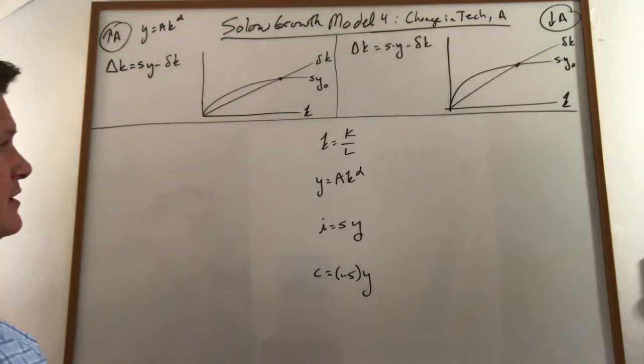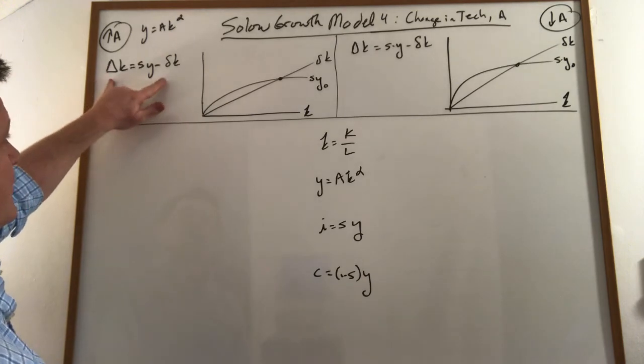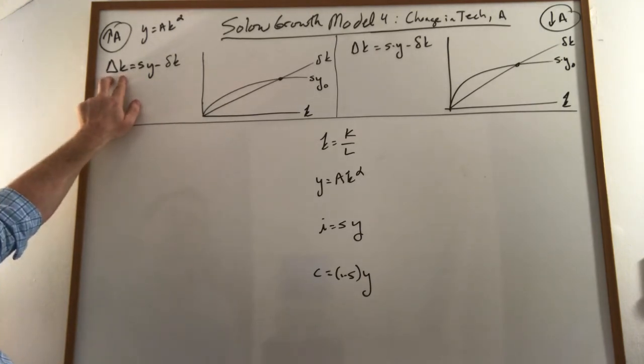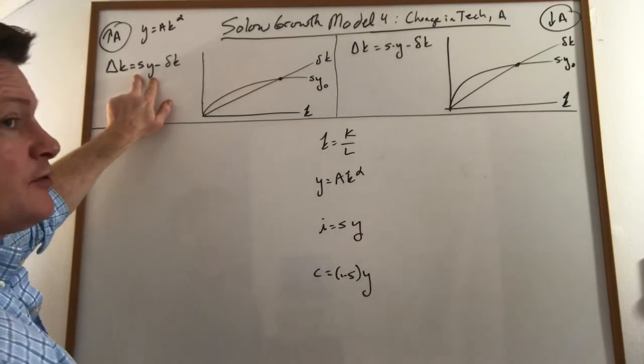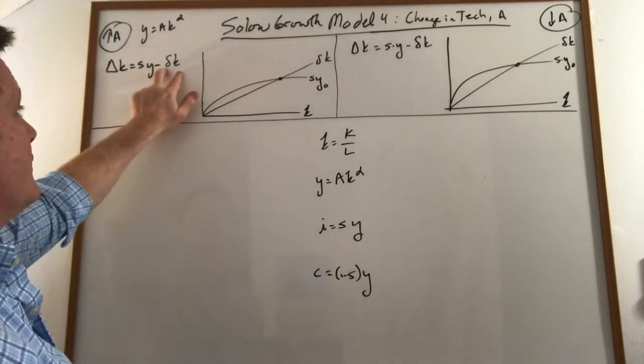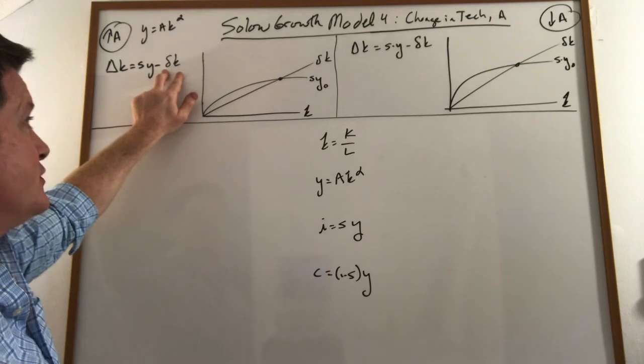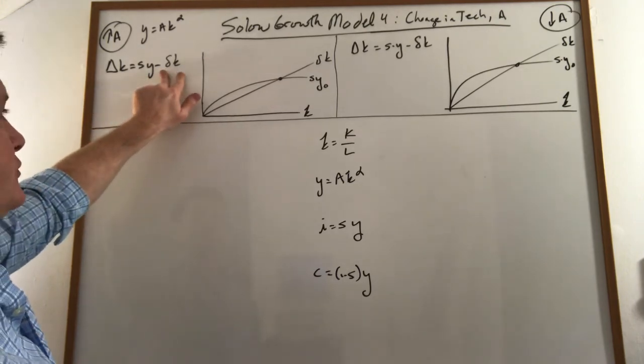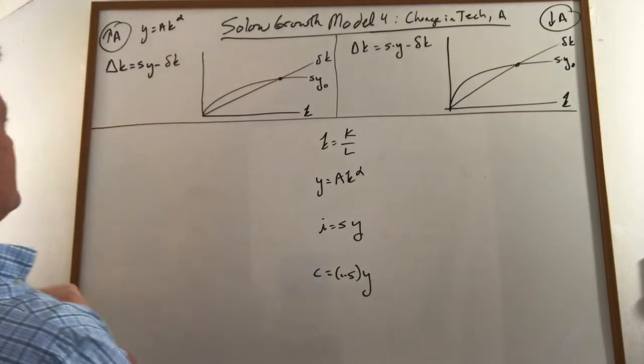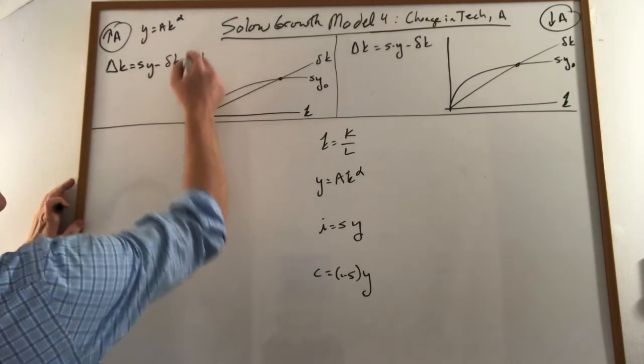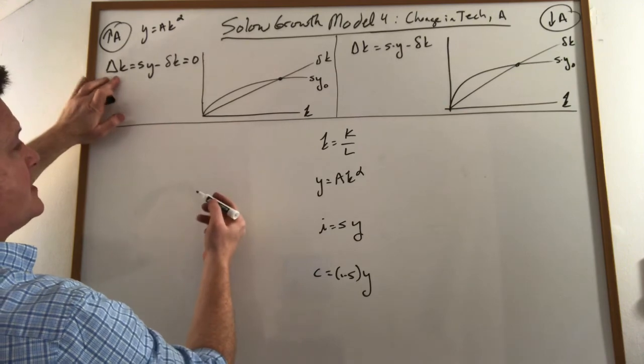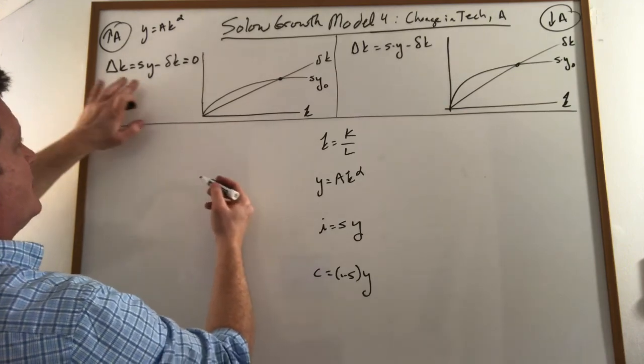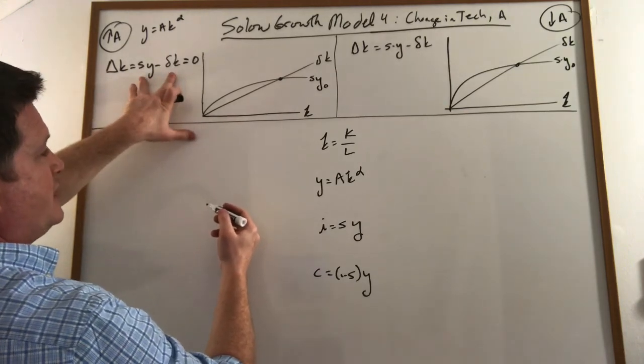The other key equation here is what we call the capital accumulation equation. The change in capital is how much you're saving or investing versus how much you're losing through depreciation. When your investment rate is just equal to your depreciation rate, your capital stock is constant, and we call that steady state. That happens when these two things are equal.